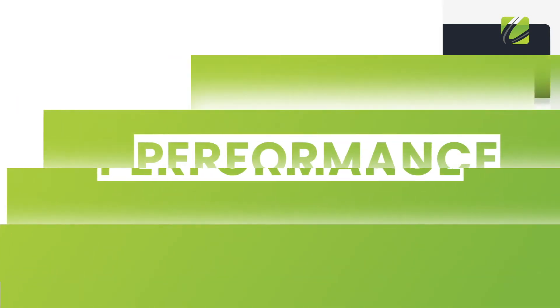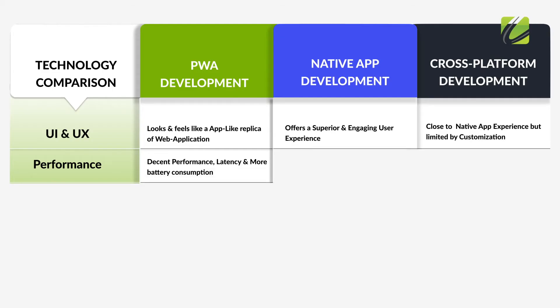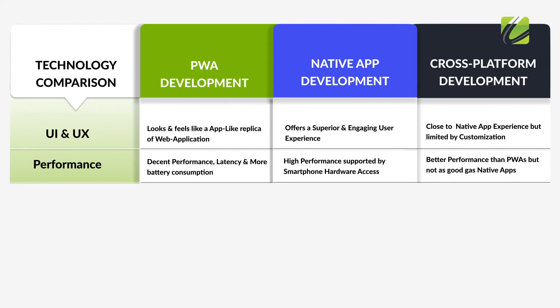The next parameter is performance. Apps built with the progressive web app approach load faster than responsive websites and deliver a similar experience, but since PWAs run on a browser there will be latency and more battery consumption. Native Android app development enables developers to leverage next-gen smartphone features through hardware support — memory management, network and wireless access, geo, camera, and more — ensuring the best app performance. Cross-platform apps are better than PWAs but not as good as native, and smartphone hardware features can't be utilized as much as with native. The native app development approach wins when businesses are looking to build a high-performance app.